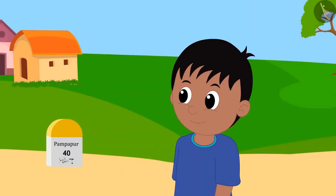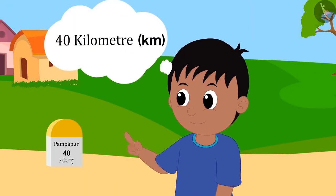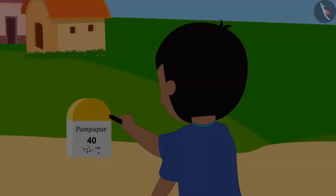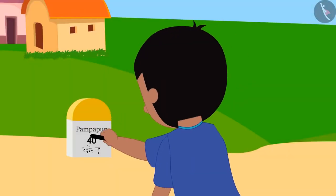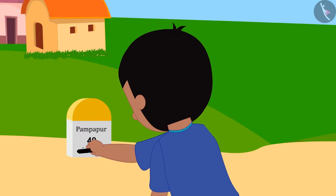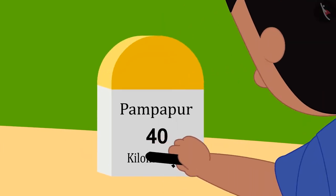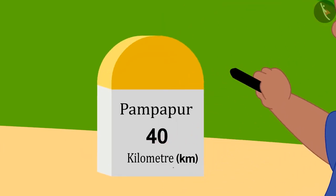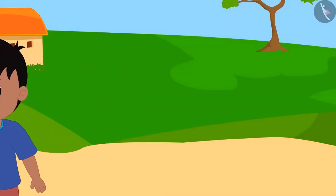Raju found the right answer with your help. Then, he took a piece of coal and wrote 40 kilometers in this way and returned to his home.